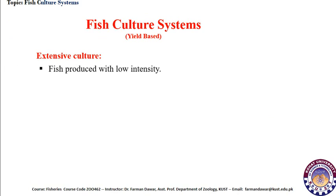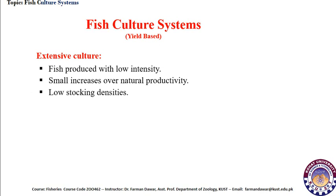Fish culture systems are basically divided into two main categories based on yield or overall productivity. The first is extensive fish culture. This type yields fishes at low intensity — it is a small increase over natural productivity, meaning the fish cultured in the extensive way is not far more than the natural productivity level.